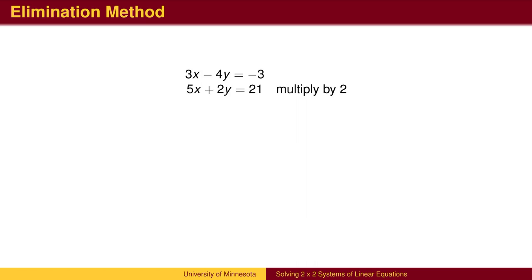In this case, if we multiply the bottom equation by 2, then the minus 4y will cancel the 4y, and we will be left with an equation involving only x. From here, we can add the two equations together, solve for x.